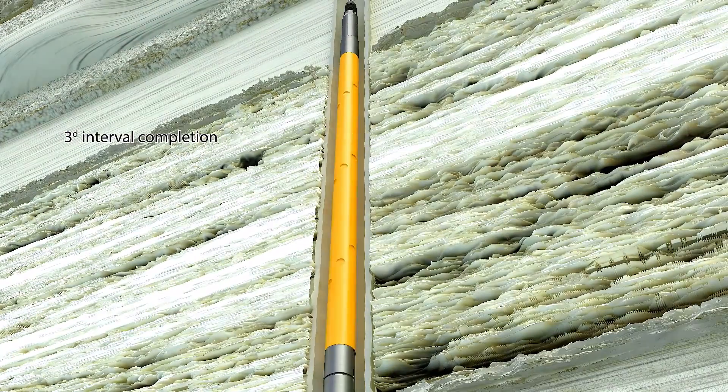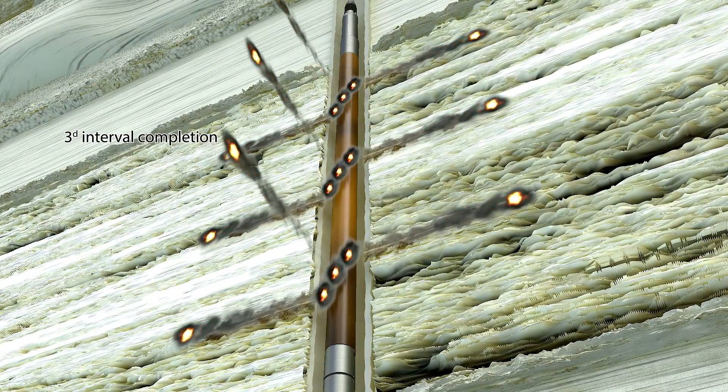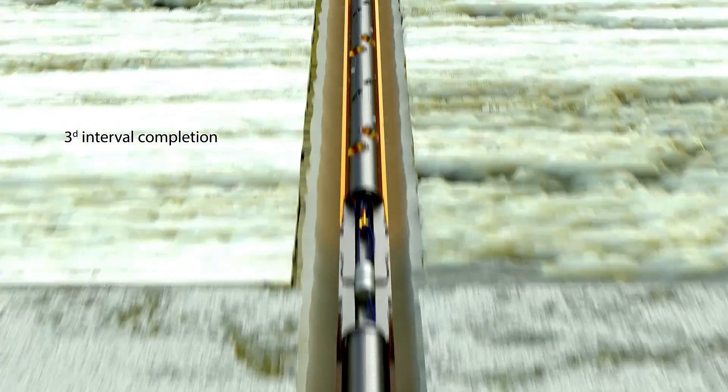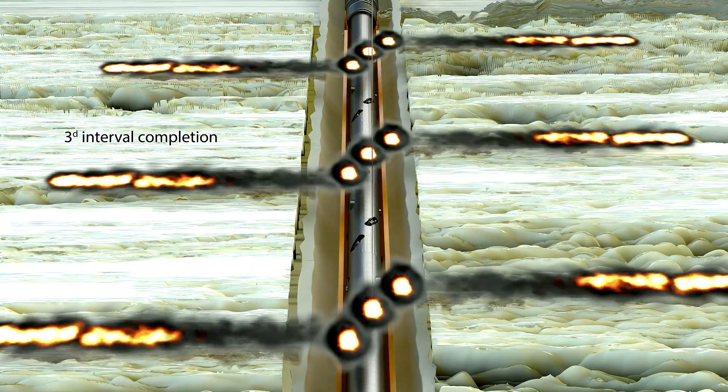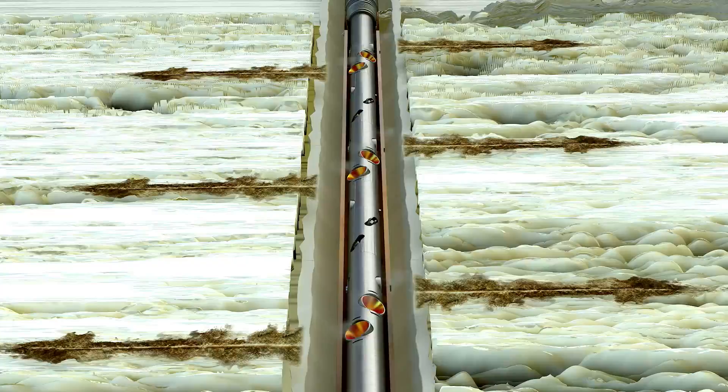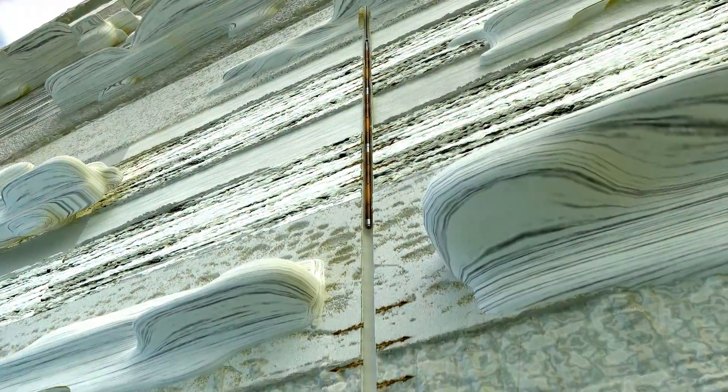The next perforators for the overlying intervals are positioned and ignited using the preceding operation scheme until the perforating jobs for the entire well have been completed. The used perforation equipment is pulled out of the hole and disassembled.